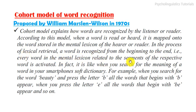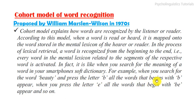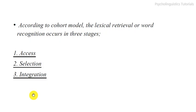Every word in the mental lexicon related to the segments of the respective word is activated. It is like when you search for the meaning of a word in your smartphone dictionary. For example, when you search for the word 'beauty' and press the letter B, all words beginning with B appear; when you press E, all words beginning with BE appear, and so on.